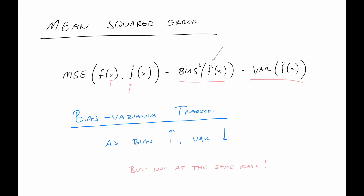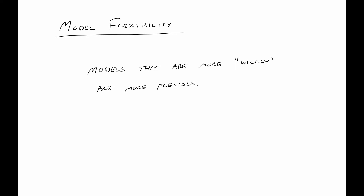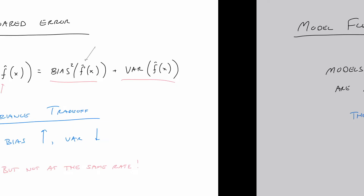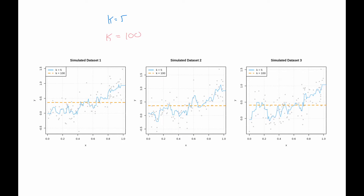Models that are more wiggly we call more flexible, and these are also the models that are more variable. Going back to k-nearest neighbors: k=5 is a much more flexible model than k=100. We see k=5 is very wiggly and very variable, whereas k=100 does not show a lot of variation.